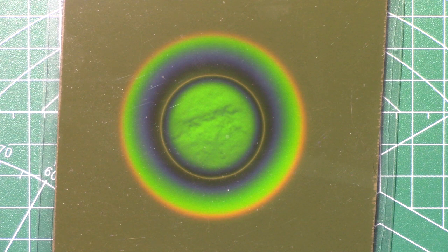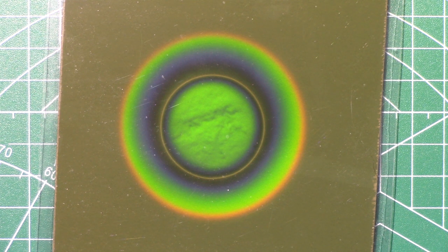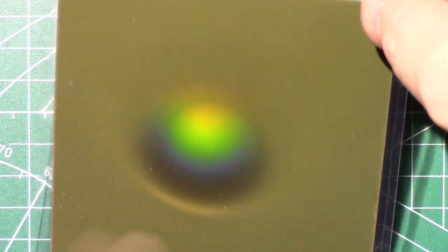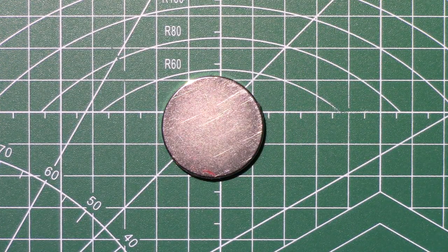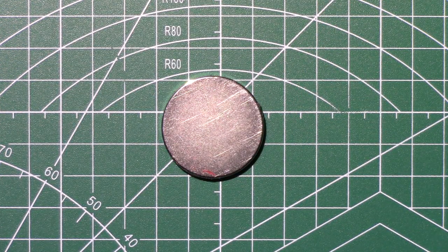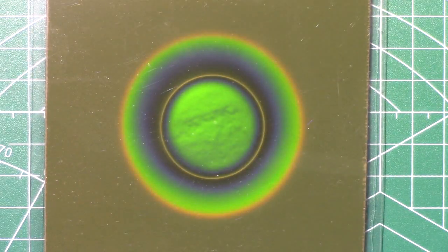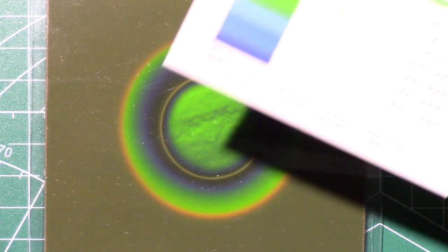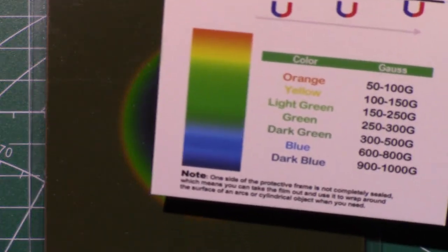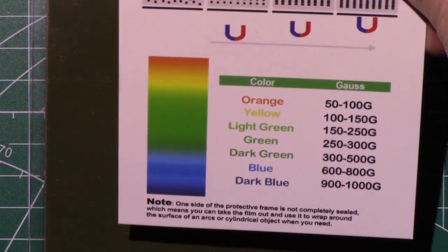I'm also going to show you some of the drawbacks of this system, but let's begin by showing you what we have. What I have here is a newfangled Magnet View film on top of a 2700 amp neodymium disc magnet. And what they give you is a card that shows you what the different colors mean in terms of Gauss.